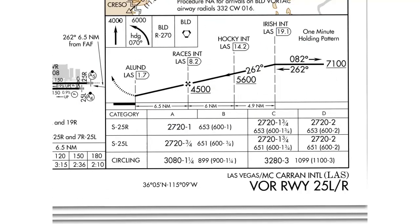This is the VOR runway 25L or 25R into Las Vegas McCarran. This chart is a little bit different, as you can find minimums for two different runways in the minima section, and the minimums are actually different. To 25R you need one mile of visibility; to 25L you only need three-quarters of a mile. Make sure that when you're flying approaches like this, you are confident of the minimums for that runway.